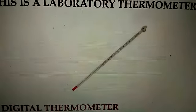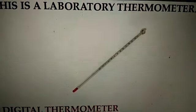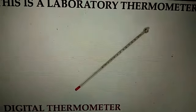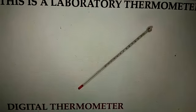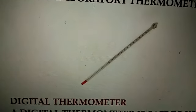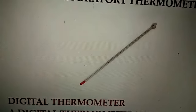Now this laboratory thermometer is similar to that of a clinical thermometer, except that it does not have a kink. And besides that, it has a reading from minus 10 degrees Celsius to 110 degrees Celsius. This laboratory thermometer is always kept in vertical position while noting the reading.